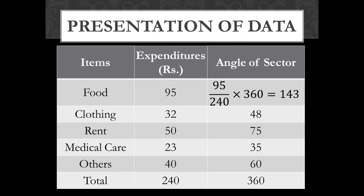95 divided by 240 multiplied by 360 gives approximately 143 degrees. 32 divided by 240 multiplied by 360 gives 48 degrees. We calculate the gate angle for each item — 50, 23, and 40 — and then make the total of all these angles equal to 360 degrees.